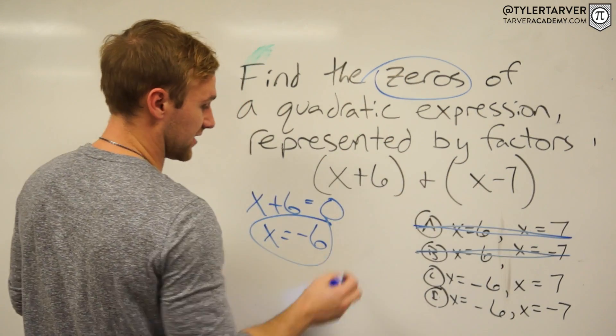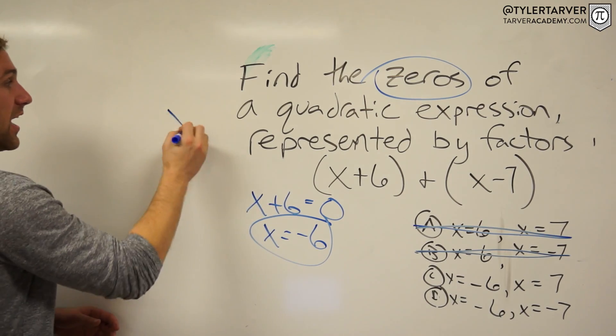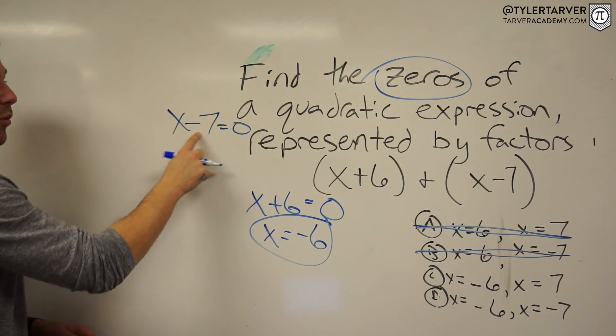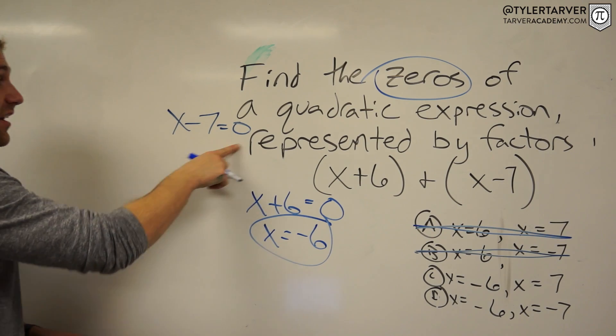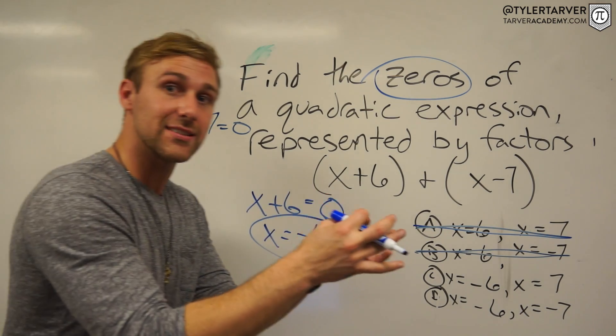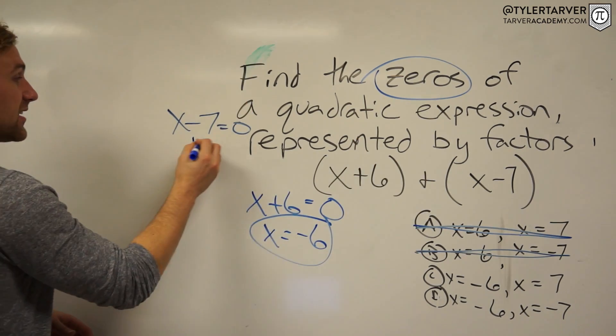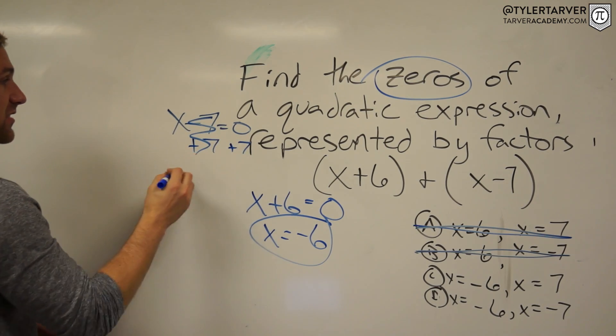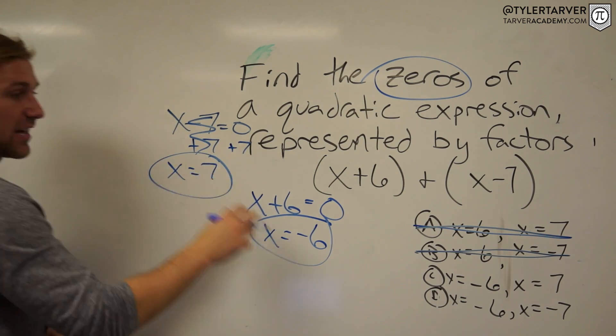So let's take our other one. We've got x minus seven. So I'm going to set it equal to zero. X minus seven equals zero. What do I do to get a minus seven to the other side? I do the opposite, which is add seven. So I'll add seven to both sides. That cancels out. X equals seven. Positive seven.